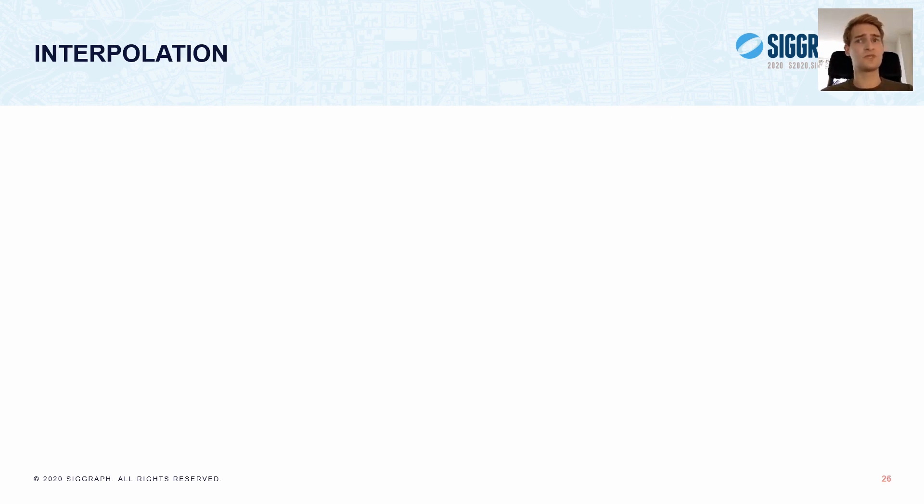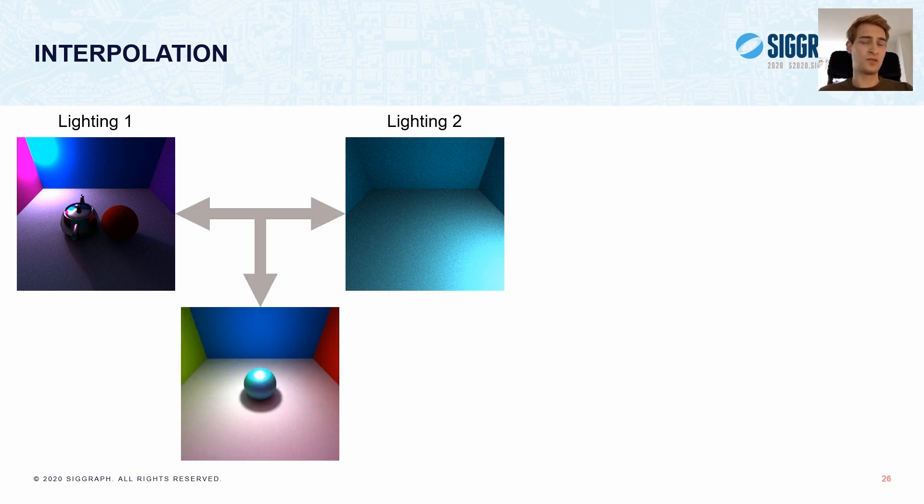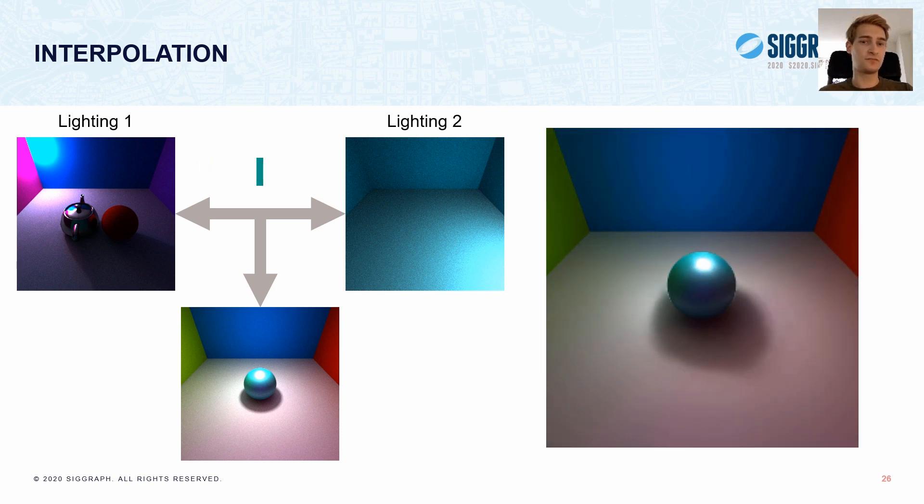Using this same idea, we can generate new lighting configurations through interpolation. Say we have two scenes, and we take the lighting partitions of each. We can then interpolate between these and place the result into a different scene. And here on the right you can see an animation of that.